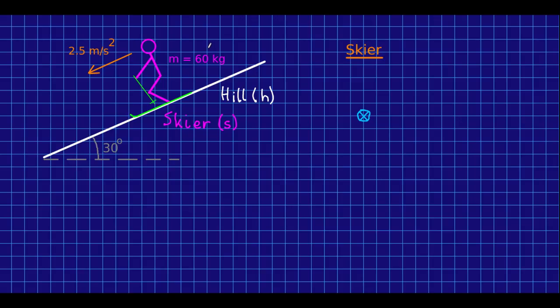Let's finish up with one more example, and this is going to be a somewhat more explicitly two-dimensional example. So here is a skier going down a hill, and they are speeding up at a rate of 2.5 meters per second squared.